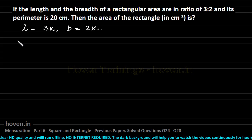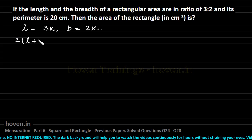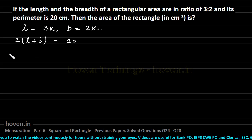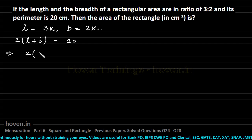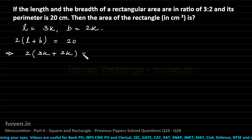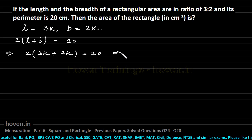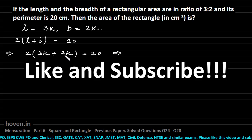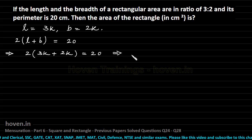Perimeter has been given as 20 centimeter. We can now fit the formula for the perimeter. We can write 2 into length plus breadth equal to 20 centimeter. Substituting l for 3k, we get 2 into 3k plus 2k equal to 20. Which implies 3k and 2k will become 5k, 5k multiplied by 2 will make it 10k.